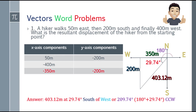Where does 209.74 degrees come from? 180 plus 29.74 degrees, CCW. Either answer is correct — you can say 403.12 meters at 29.74 degrees south of west, or 209.74 degrees CCW. It depends on your teacher.